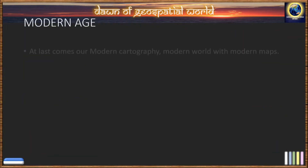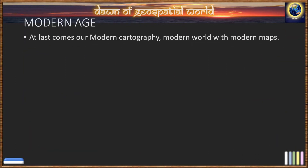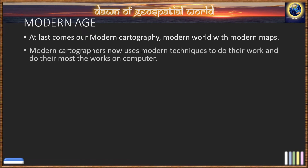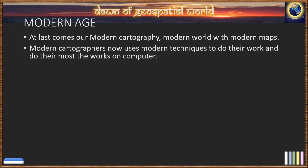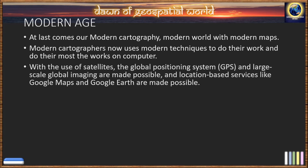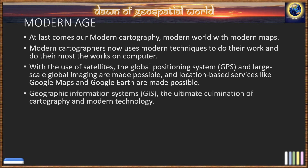Now let's look at the modern era of cartography. Modern cartographers use modern techniques and powerful computers to do their work. With the use of satellites, global positioning systems, and large-scale global imaging are made possible. Location-based services like Google Maps and Google Earth are also made possible.